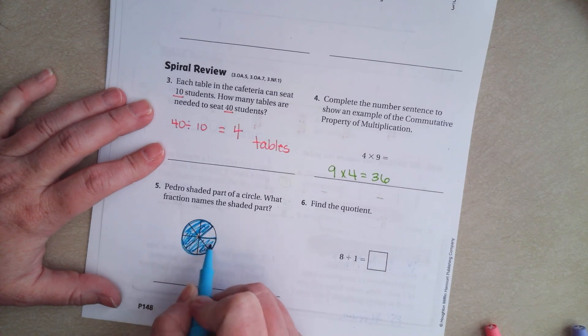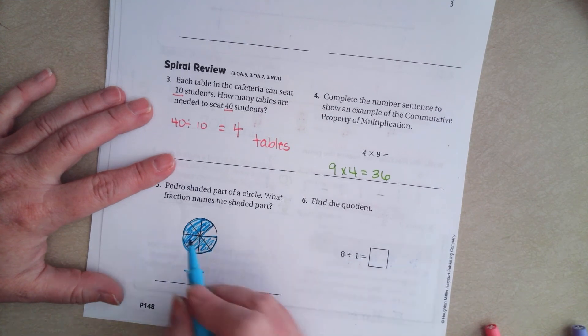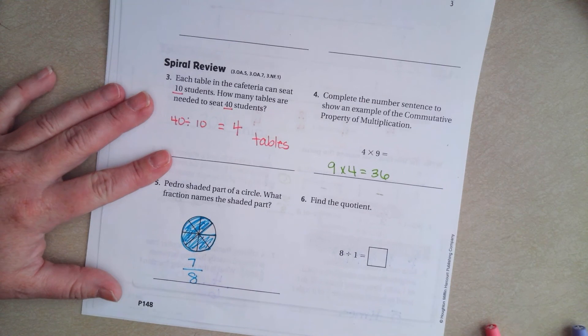How many pieces are there all together? So, there's 1, 2, 3, 4, 5, 6, 7, 8. 8 pieces all together. So, that's our denominator. 7 of those are filled in. That's it, guys.